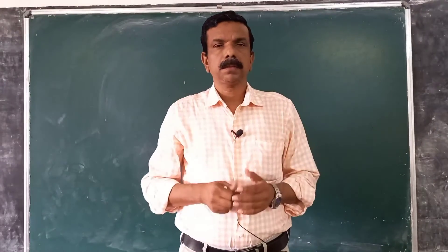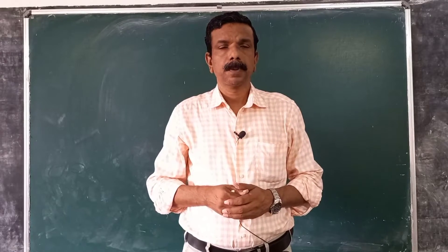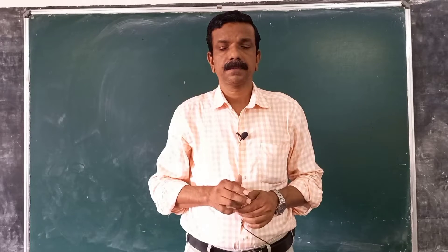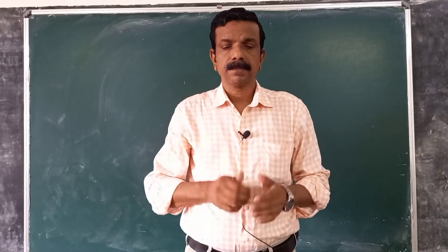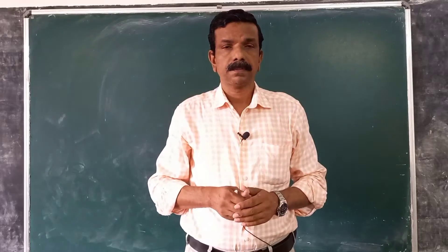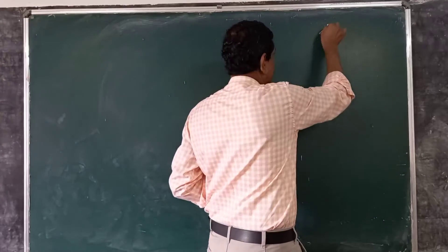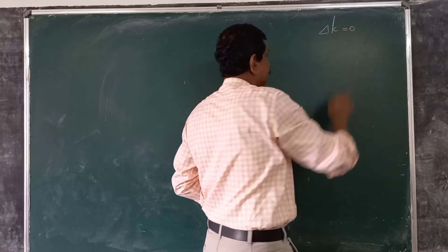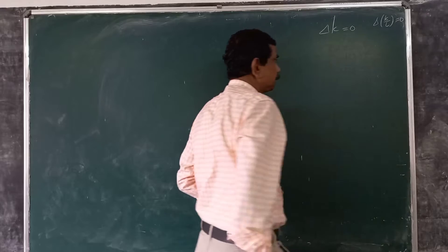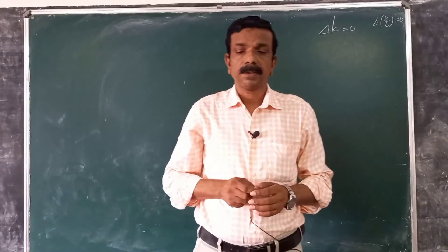Dear students, in this session we will give a mathematical solution to steady state. By definition, the steady state quantity of capital is determined by the condition that Δk is equal to 0, that is Δ(k/L) is equal to 0. Steady state is defined as the point where the change in the capital-labour ratio is 0.